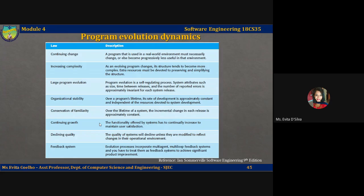Lehmann and Belady claim these laws are likely to be true for all types of large organizational software systems, what they call E-type systems. These are systems in which the requirements are changing to reflect changing business needs. New releases of the system are essential for the system to provide the same or increased business value.